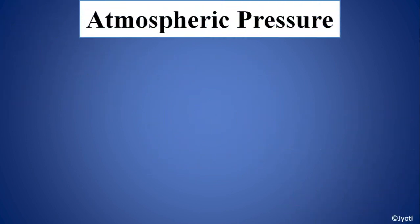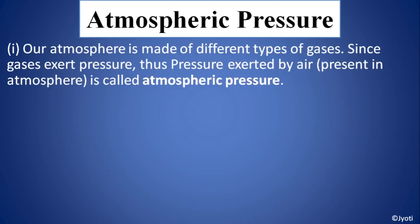Ab hum dekhenge atmospheric pressure. Our atmosphere is made up of different types of gases, aur humne bataya ki gases pressure exert karte hain. Thus the pressure exerted by air that is present in the atmosphere is called atmospheric pressure. Atmosphere mein different types ke gases hote hain — carbon dioxide, hydrogen, oxygen, nitrogen, carbon monoxide — yeh saare gases hain, aur yeh gases pressure exert karte hain, so the pressure exerted by atmospheric air is called atmospheric pressure.